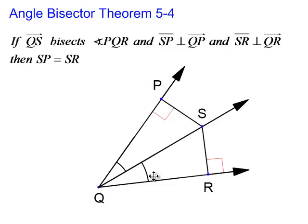The angle bisector theorem says if QS bisects angle PQR, so I mark those two angles as congruent, and SP is perpendicular to QP the ray, there's your right angle there, and SR is perpendicular to this ray.